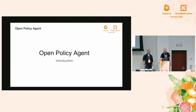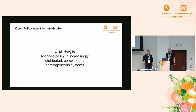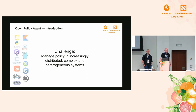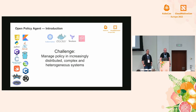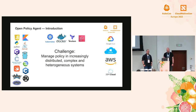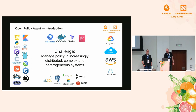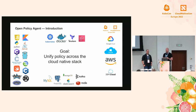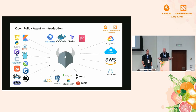Starting with OPA - what is the challenge or what's the problem we're trying to solve? It's basically this: to manage policy with increasingly distributed, complex, and heterogeneous systems. A modern application stack consists of a wide array of programming languages, platforms, and frameworks. An application needs to be deployed somewhere, and on top of that you have infrastructure and data. The goal of the OPA project is to unify policy across this whole cloud-native stack.